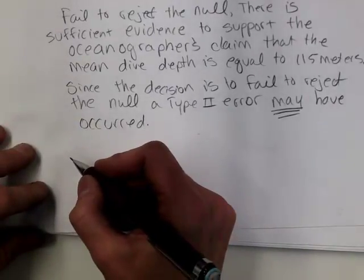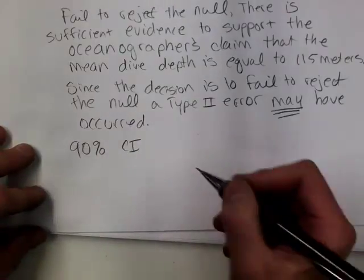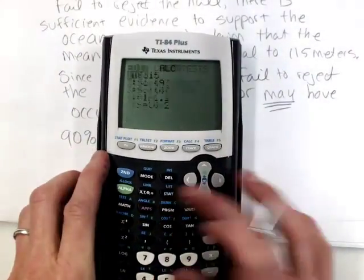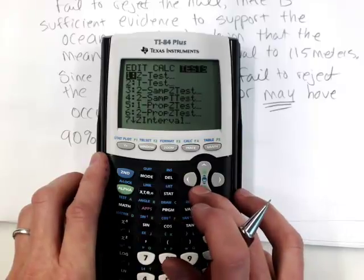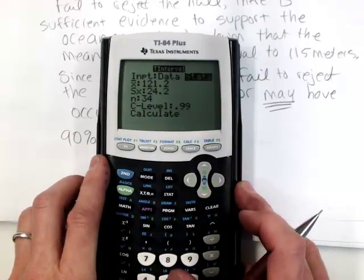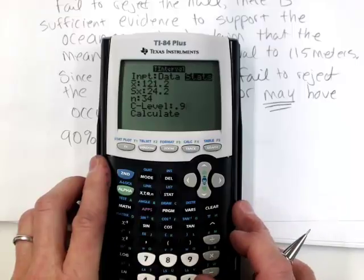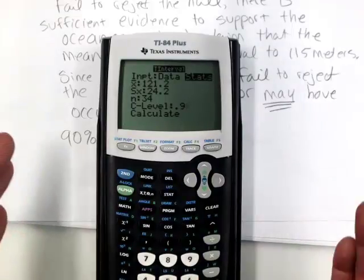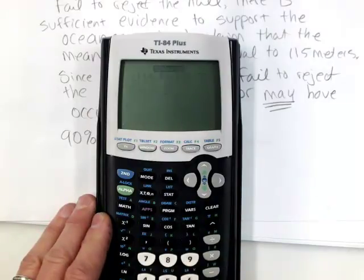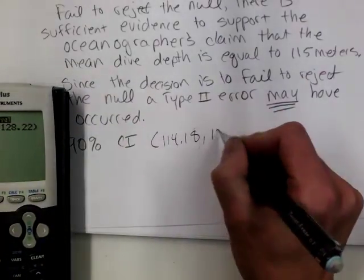Last but not least, let's look at the corresponding confidence interval. Since alpha was equal to 0.1, we would be finding a 90% confidence interval. So again, I'm going to use my T interval in the calculator. I'm going to press on stat, right arrow over to test, and then scroll down to T interval. And it's really nice. It kept the information from the hypothesis test, but I want to change my level of significance to 0.9. So if alpha is 0.1, the confidence interval is 0.9. If alpha is 0.05, the confidence interval is 0.95. So our confidence interval goes from 114.18 up to 128.22.